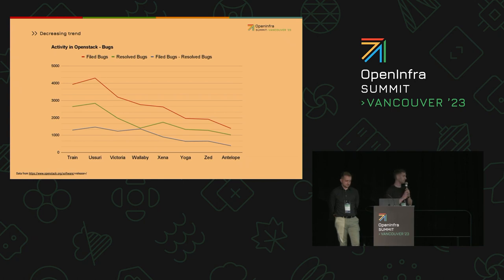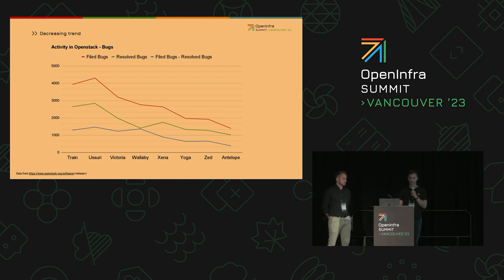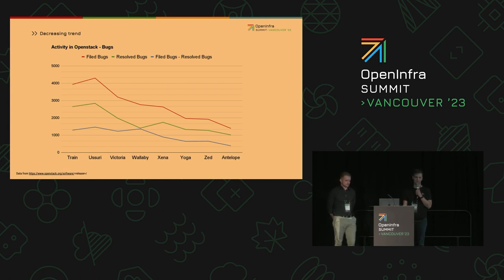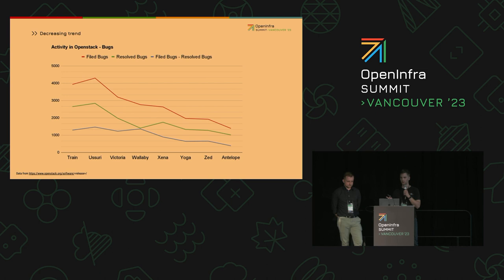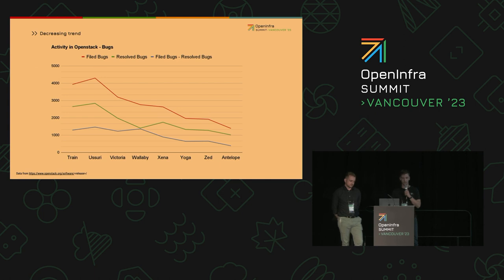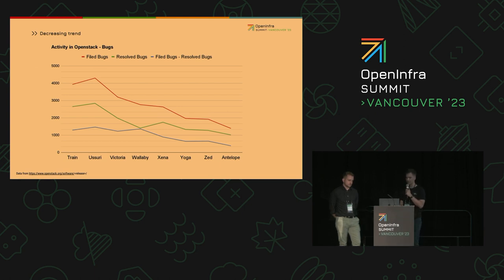Here's an interesting graph which shows the number of filed and resolved bugs per each release cycle. You can see that both values are going down, which is good news especially for the number of filed bugs. But also the number of resolved bugs — which alone might seem like a bad thing — is definitely not the case, because if you take a look at the delta between those values it is decreasing as well, which means that we as a community are able to handle the filed bugs in a better way. One possible interpretation is that OpenStack is becoming more mature and solid.